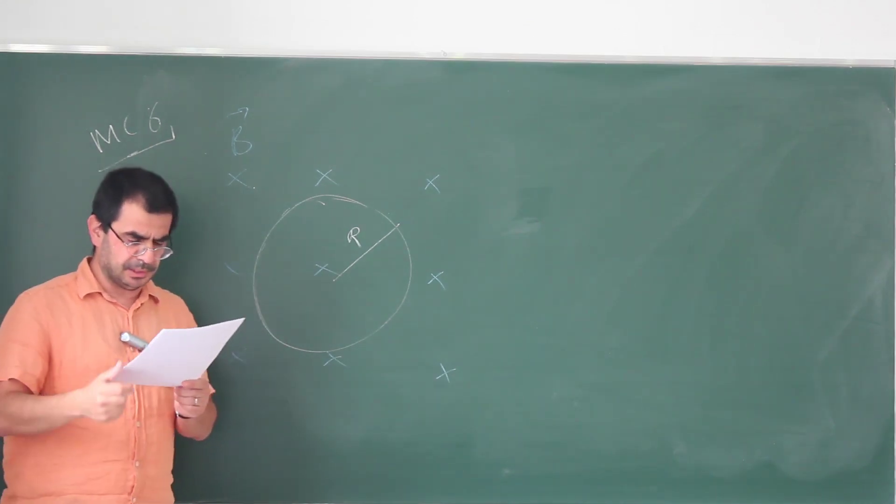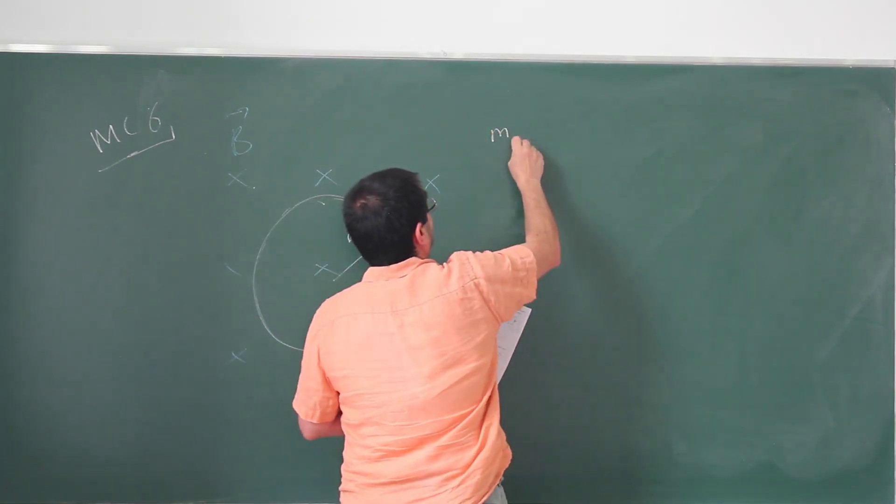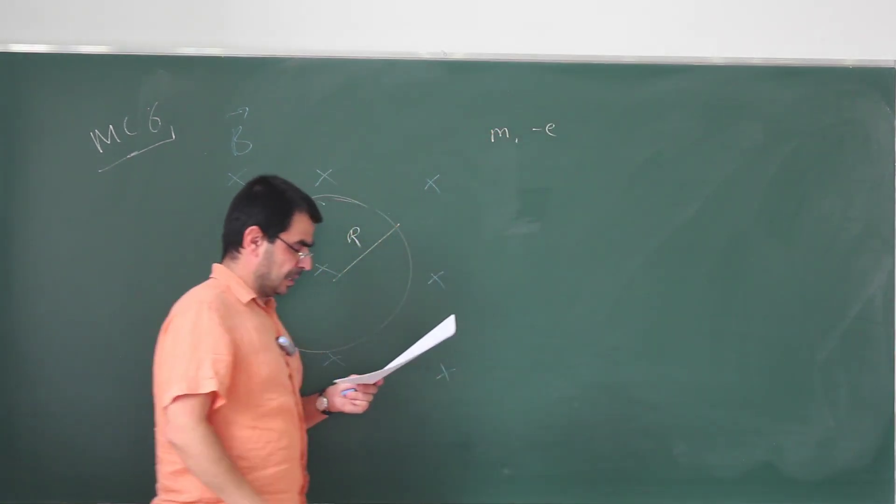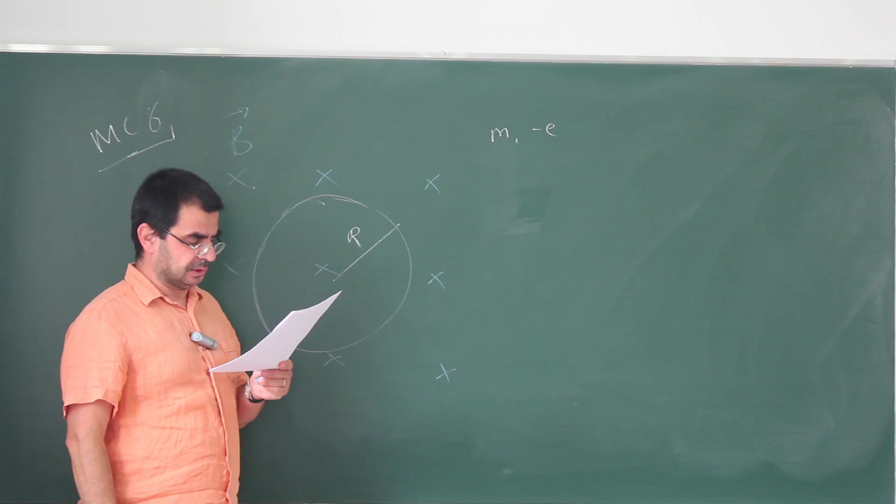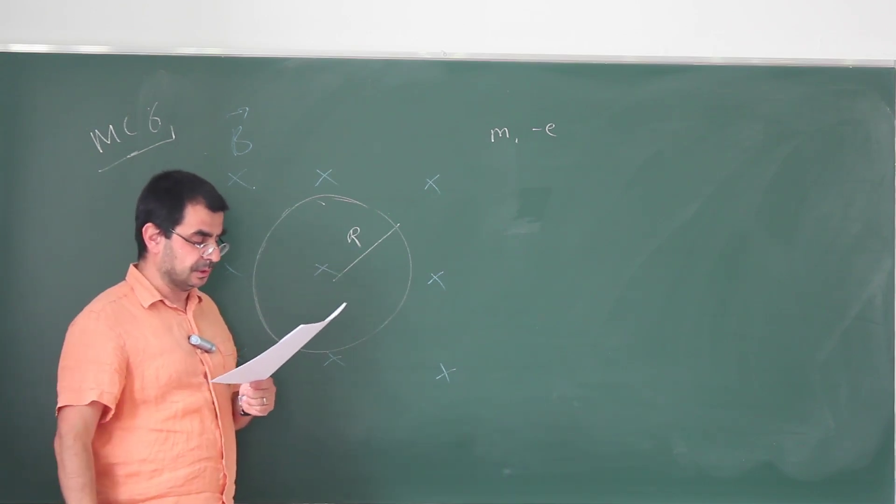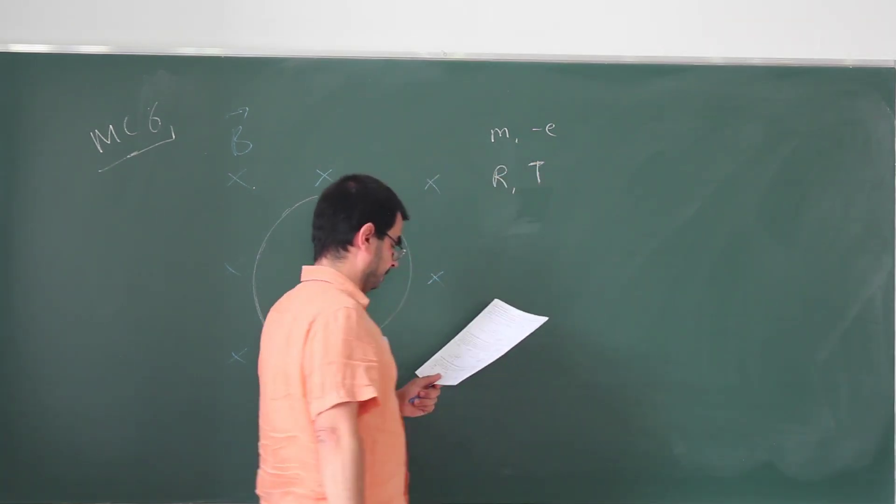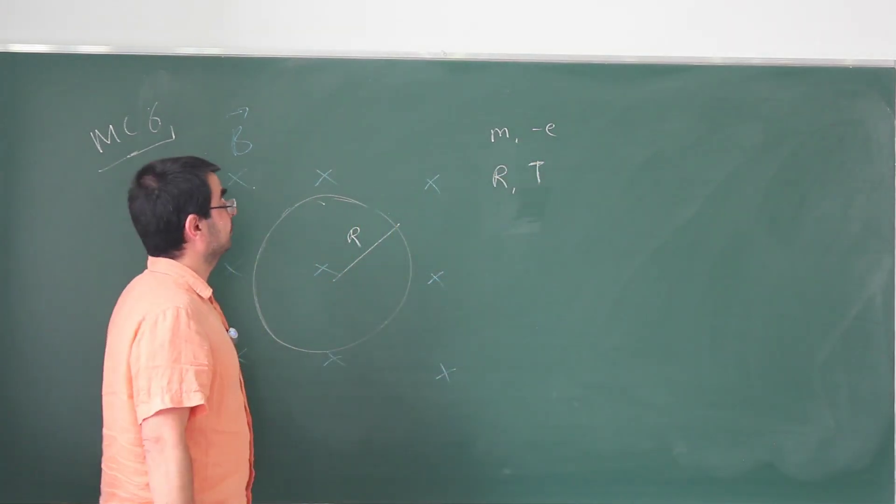Consider region of space with uniform magnetic field B, an electron with mass M and charge minus E. So M and minus E enters the region and moves in the plane perpendicular to the magnetic field B, as shown in the figure. The electron rotates in a circular orbit of radius capital R in period T. What's the magnitude of the magnetic field B?